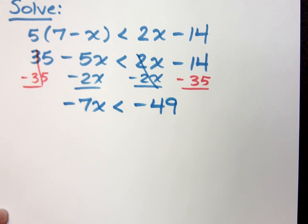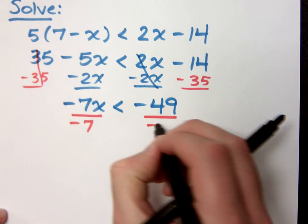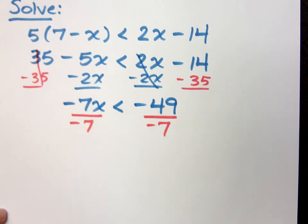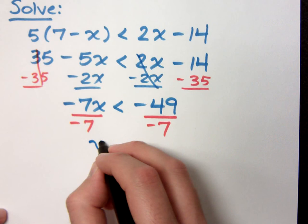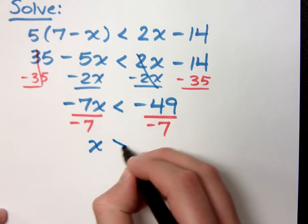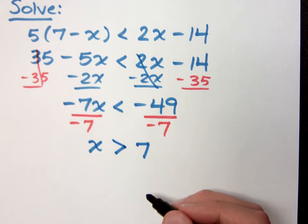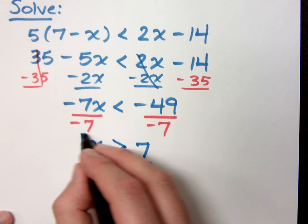Now though, since I'm trying to solve for x, I have to divide by negative 7. Since I'm dividing by negative, my inequality symbol has to change directions. So instead of being less than, it's now going to be greater than. That's greater than positive 7. So this is my solution, but I want to redo this.